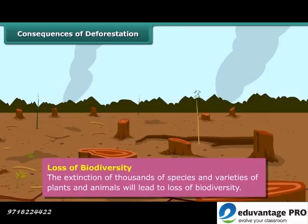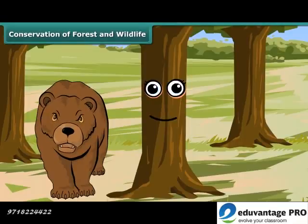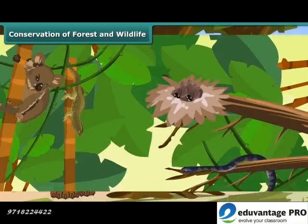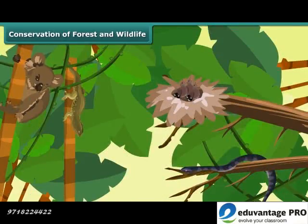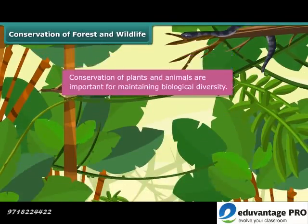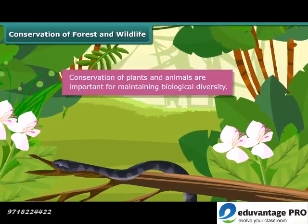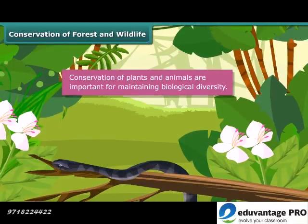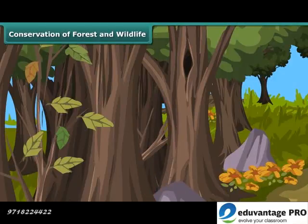Loss of biodiversity: cutting a forest means the extinction of thousands of species and varieties of plants and animals, many of which have never been catalogued scientifically. You have become aware of the effects of deforestation, so now you can understand that there is a need to conserve the forests and wildlife. Plants and animals are needed for the sustained development of the earth. Conservation of plants and animals is important for maintaining biological diversity, which is needed for the survival of humans.